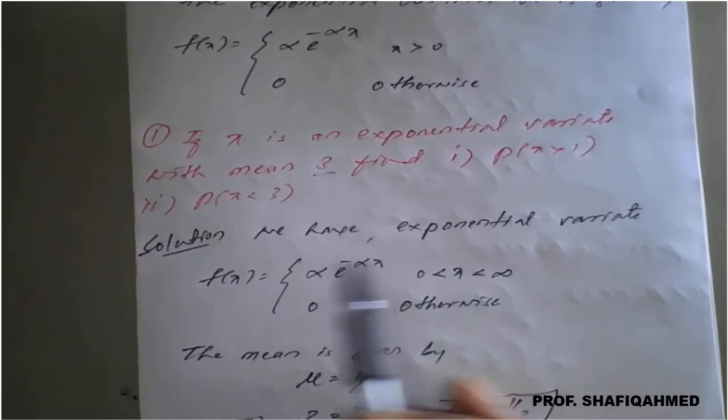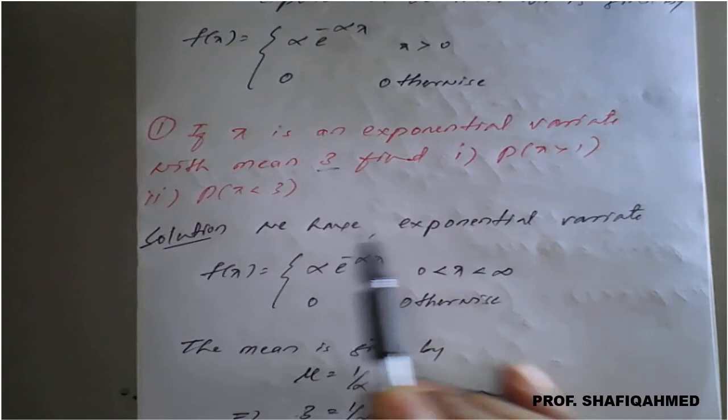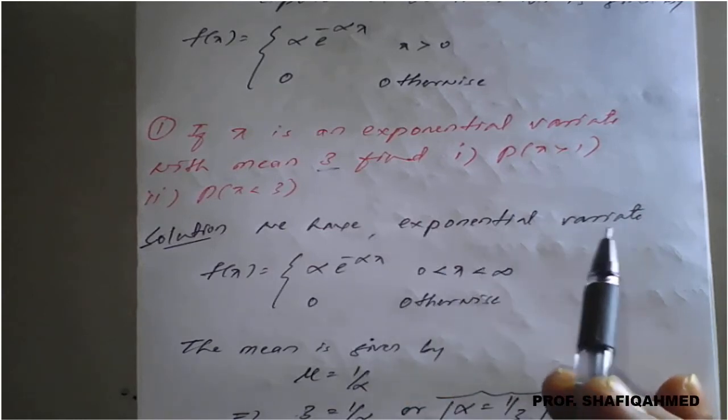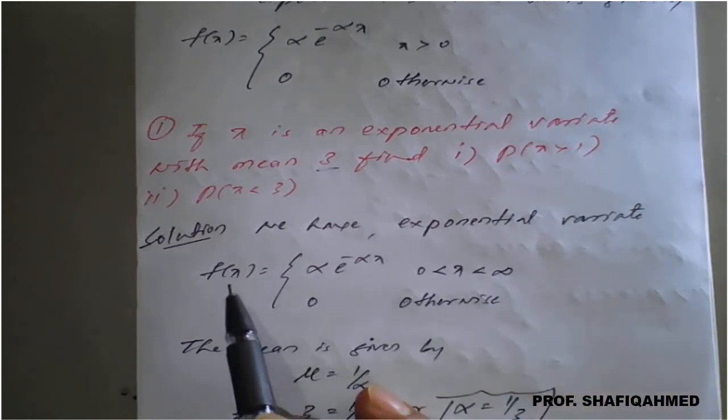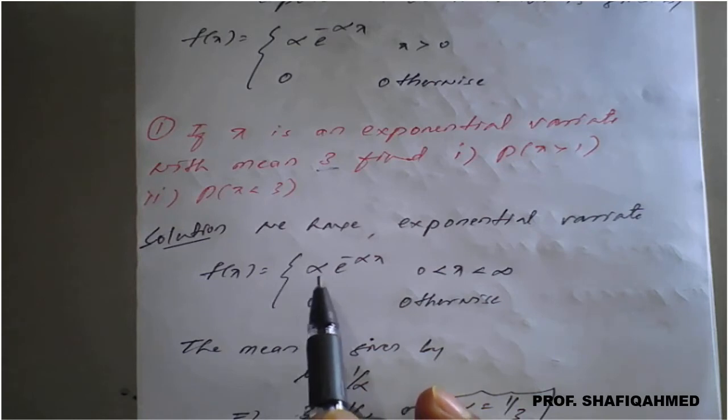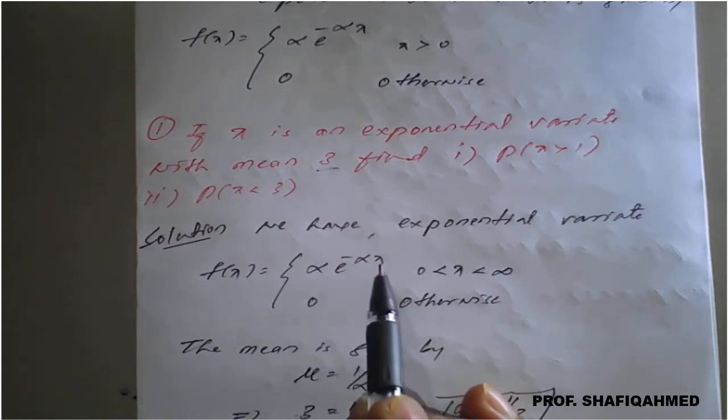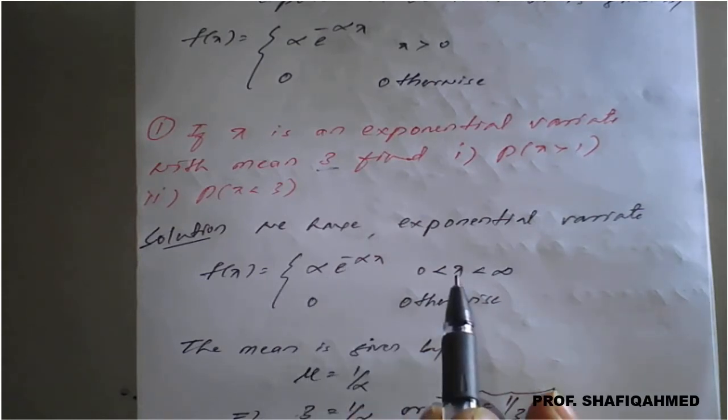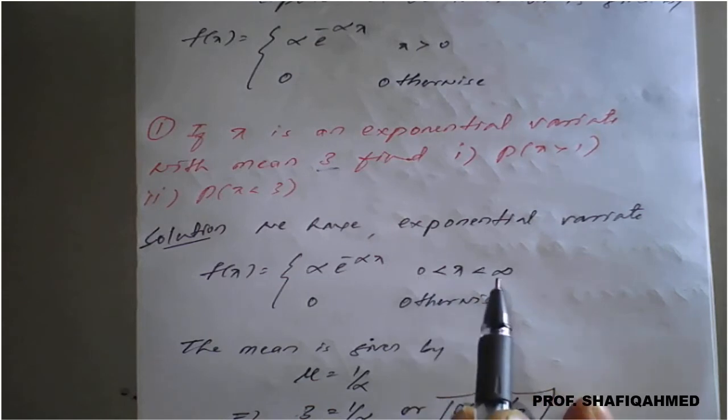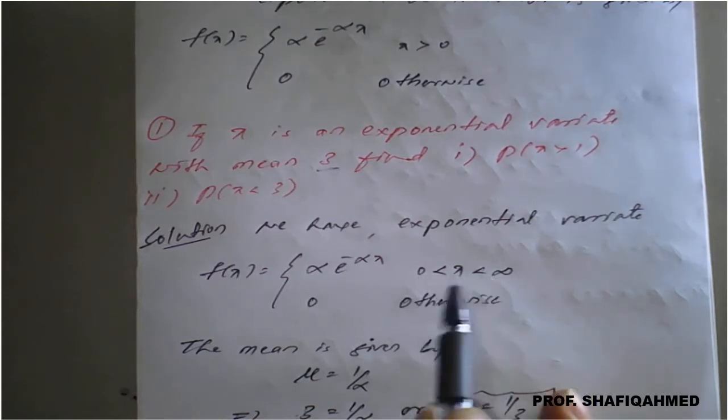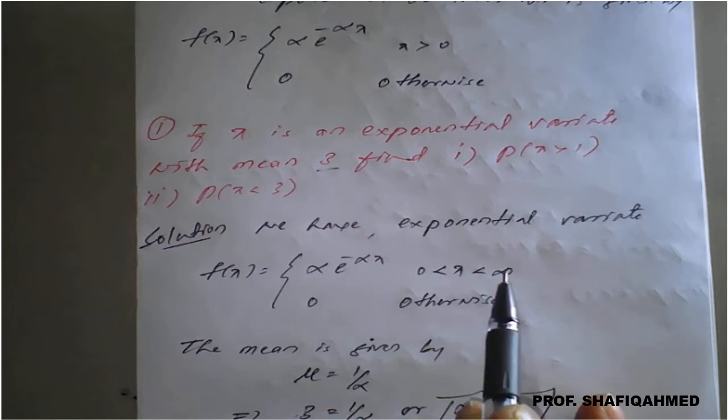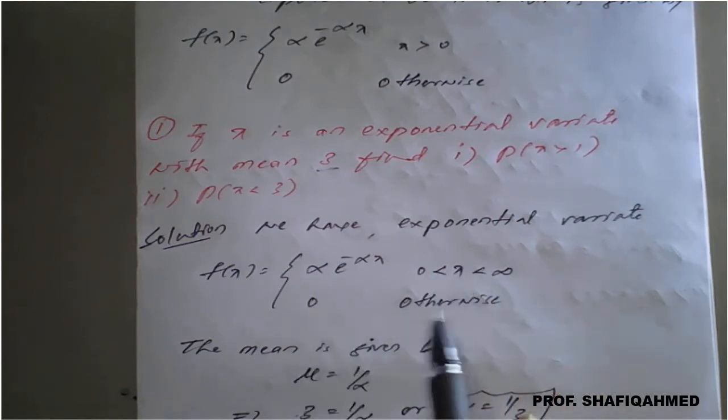We know that the exponential variate is given by f(x) equals alpha e raised to minus alpha x, where x is greater than 0, meaning the endpoint is 0 here to infinity on the positive side, and 0 otherwise.